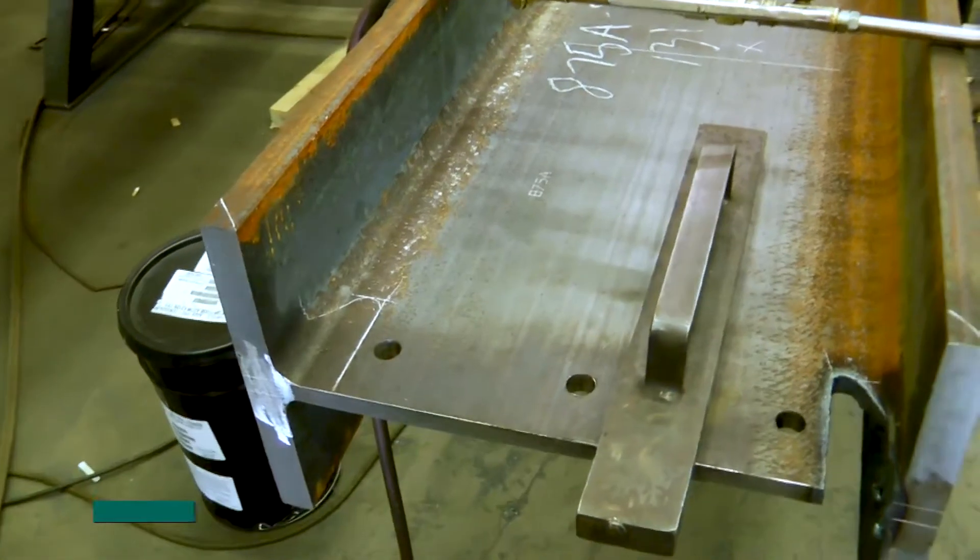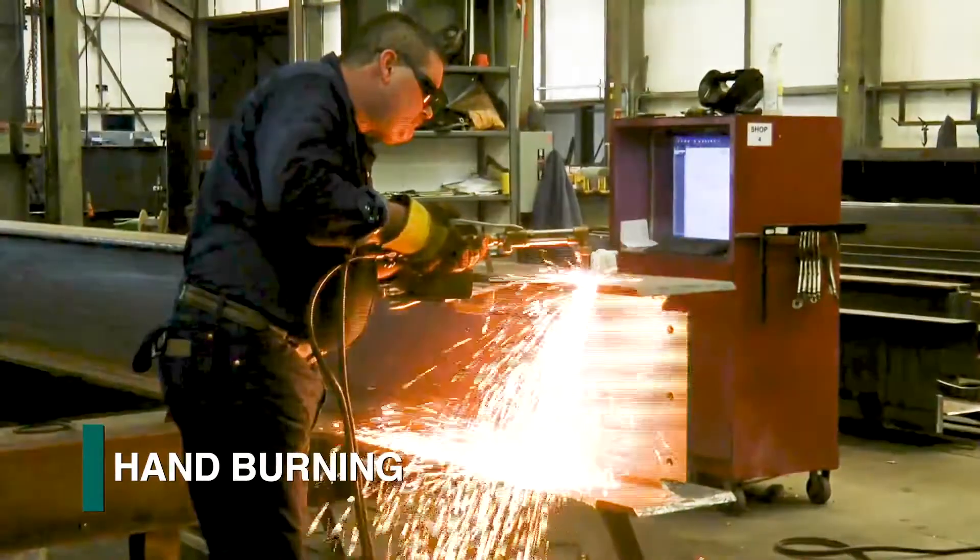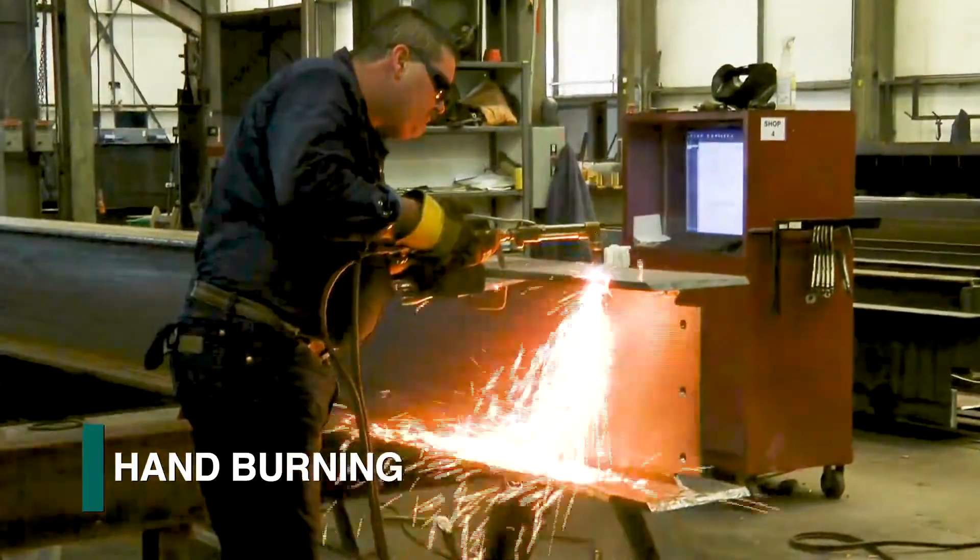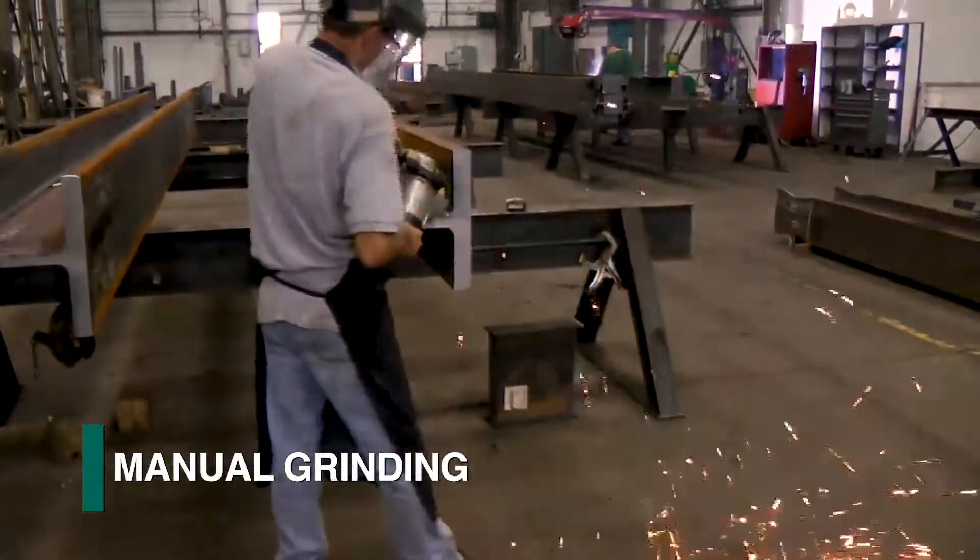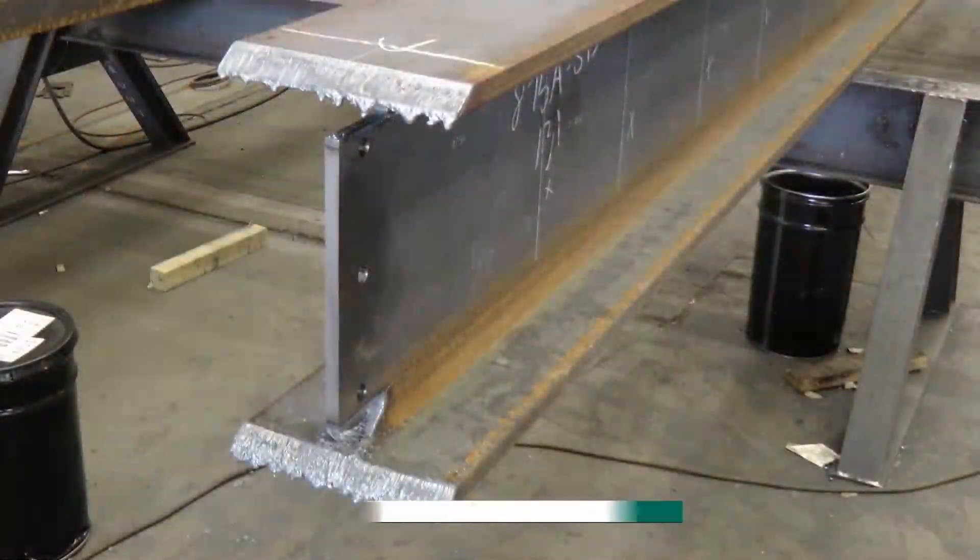Some shops today resort to manually laying out cuts, which are subsequently processed with a handheld torch before a grinder is used to eliminate slag and generally improve the cut's appearance.